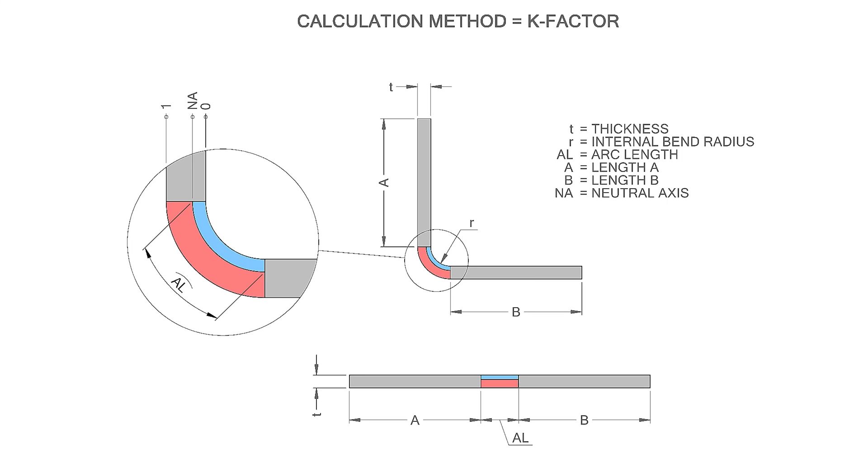K-factor is a user friendly method of calculating a developed length. This is due to the fact a single user defined value can cover all situations. However, in situations where accuracy is paramount, the bend allowance or bend deduction tables are usually employed.